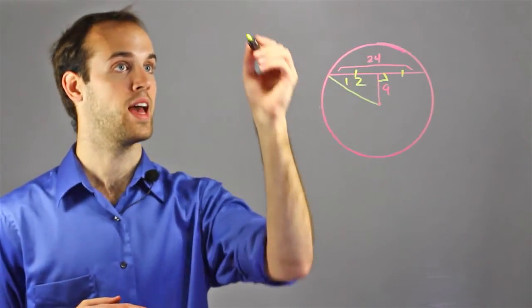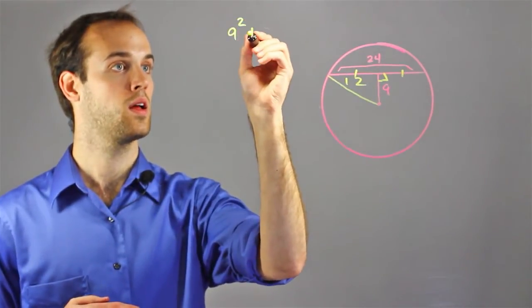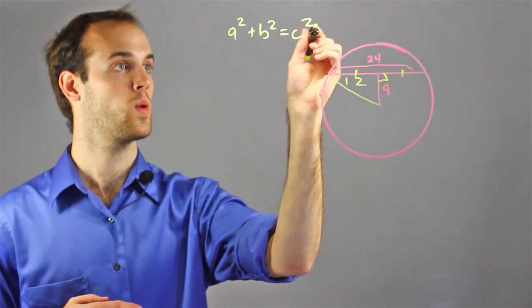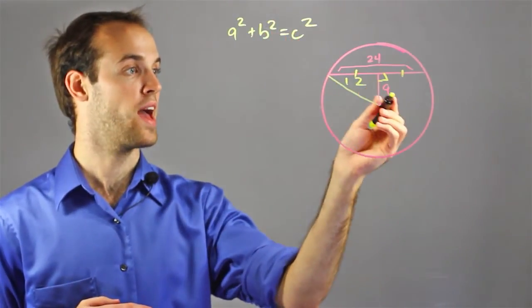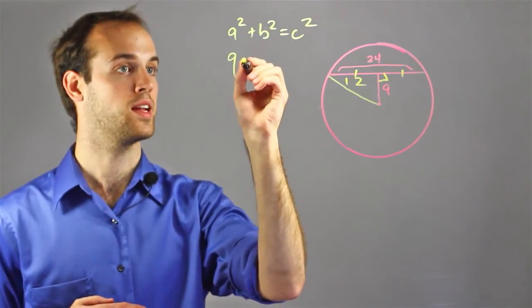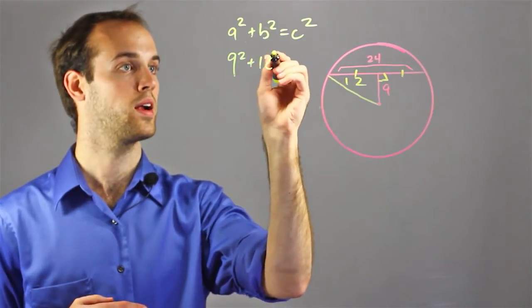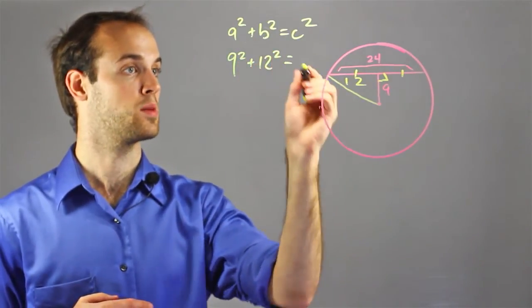So, I'm going to say a squared plus b squared is equal to c squared. And I have the two legs, which are 9 and 12, so I just plug that in. 9 squared plus 12 squared equals c squared, which is going to be my radius.